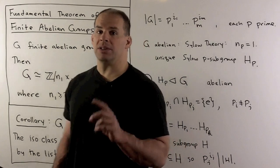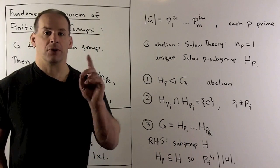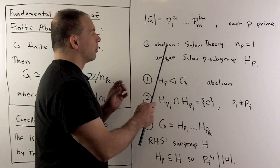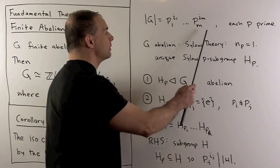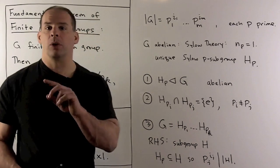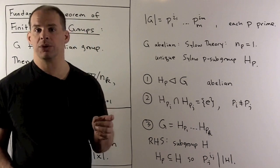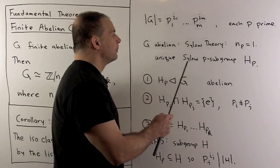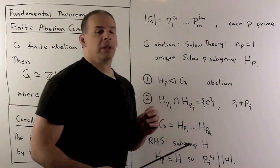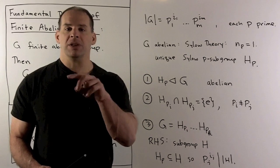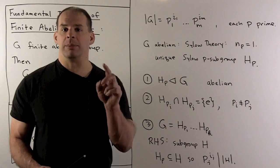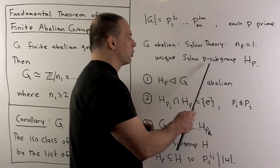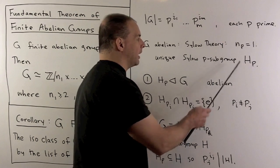Now, to see the fundamental theorem, the first step is to take the order of the group and factor it into powers of primes, and we'll consider the Sylow subgroups. Because G is abelian, Sylow theory says the number of Sylow p-subgroups for a given p must be equal to one. So we're going to have a unique Sylow p-subgroup, and I'll call that H sub p.